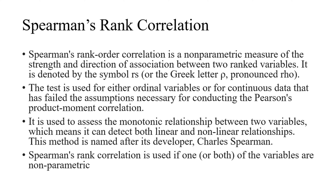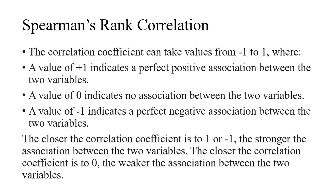This method is named after its developer Charles Spearman. Spearman's rank correlation is used if one or both of the variables are non-parametric. The correlation coefficient can take values from minus 1 to plus 1, where plus 1 indicates a perfect positive association, zero indicates no association, and minus 1 indicates a perfect negative association. The closer the coefficient is to 1 or minus 1, the stronger the association; the closer to 0, the weaker the association. This is the same as Pearson's product moment correlation.